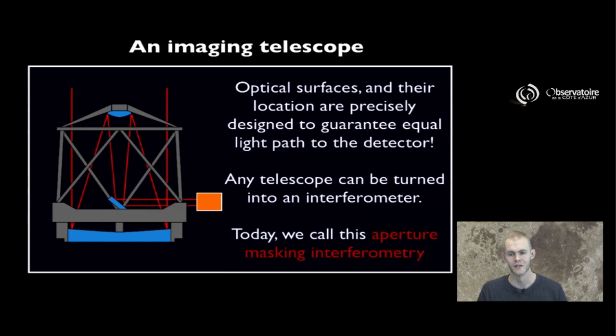Which is a good thing because that means that any telescope can be turned into an interferometer. You simply have to put a mask in front of your telescope and the telescope does the housekeeping for you and is going to guarantee that the light is going to reach your detector or your instrument in sync with each other.